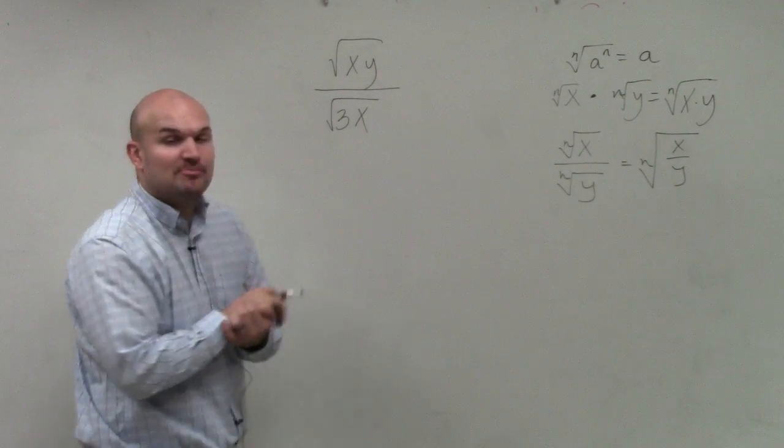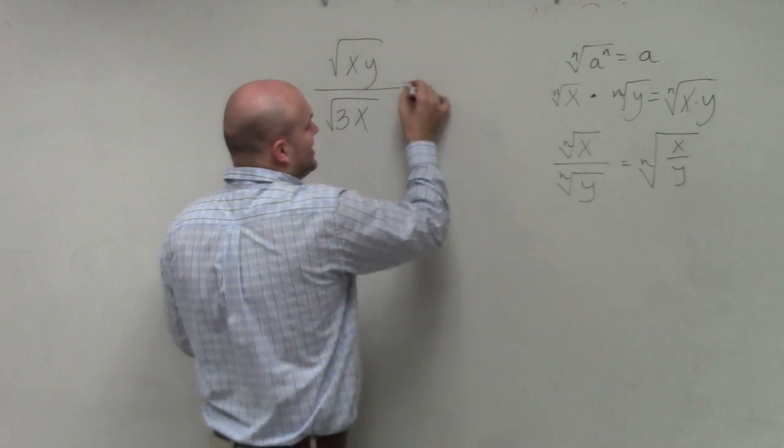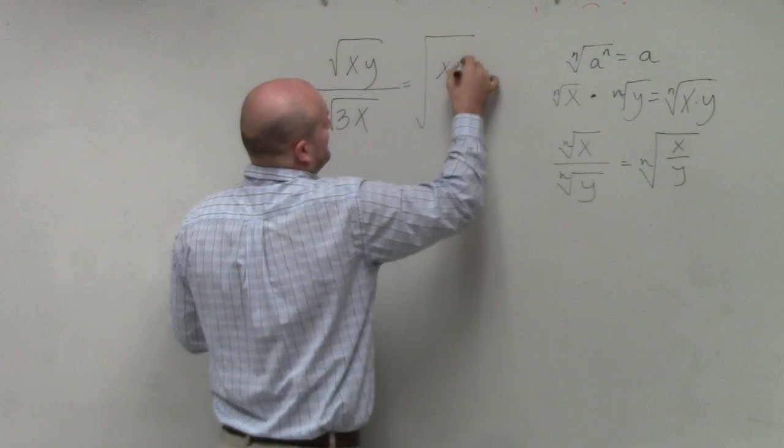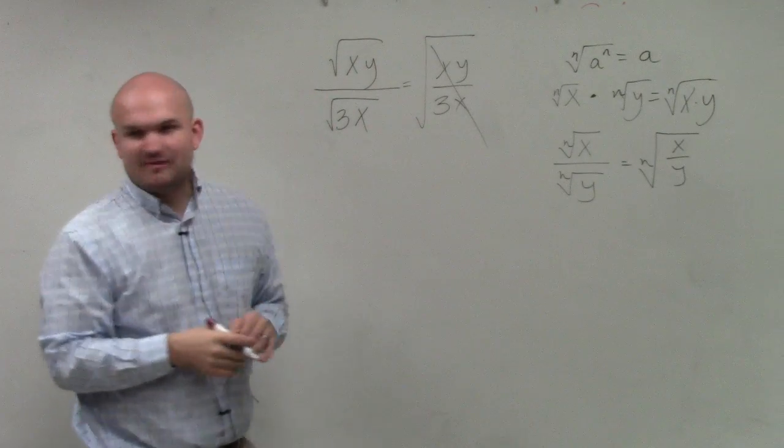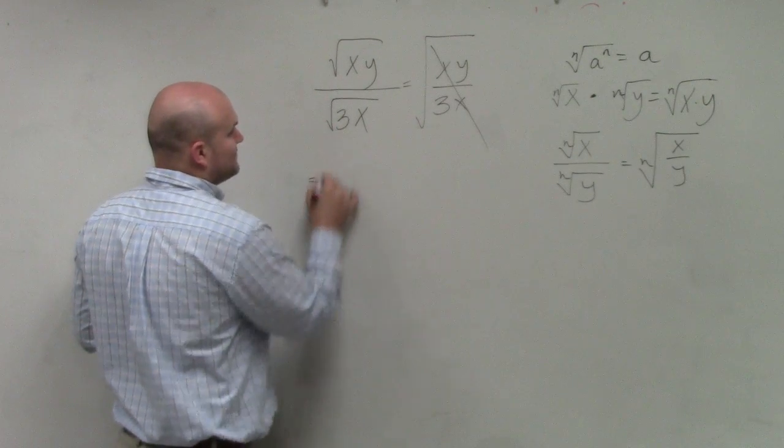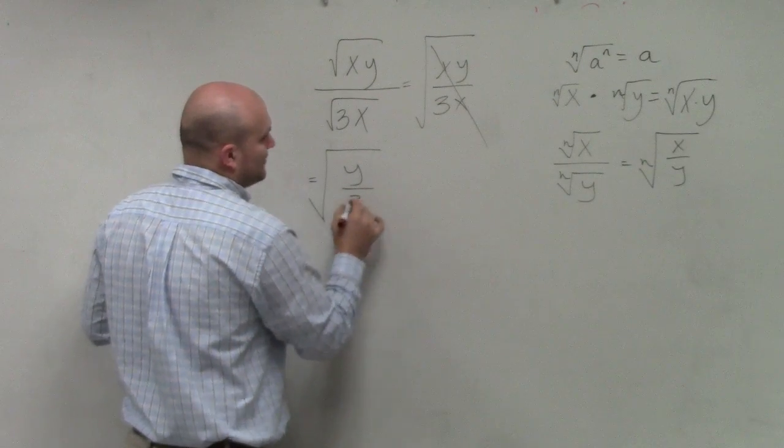So first of all, if I was going to do a problem like this, first thing I look at is simplifying this. xy over 3x. Those automatically simplify, right? So therefore, I'm left with y over 3.